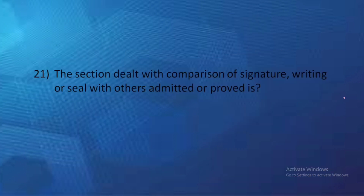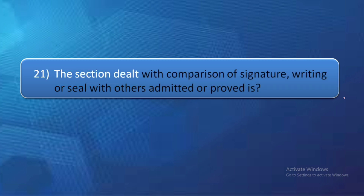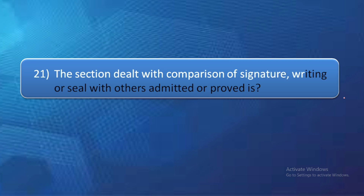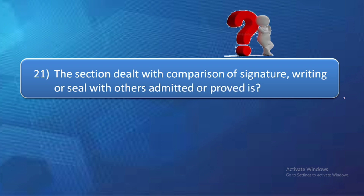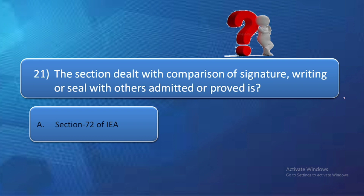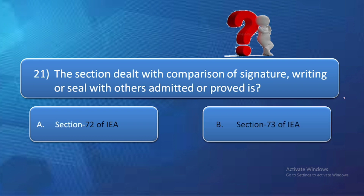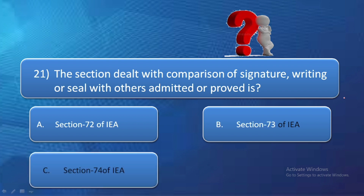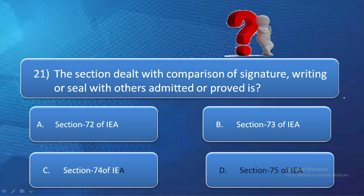Next question: The section that deals with the comparison of signatures, writing, or seals with other admitted or proved documents is — option A: section 72 of Indian Evidence Act, option B: section 73 of Indian Evidence Act, option C: section 74, option D: section 75. Section 73 of the Indian Evidence Act deals with the comparison of signatures, writing, or seals with other admitted or proved documents. So the correct answer is option B — section 73.